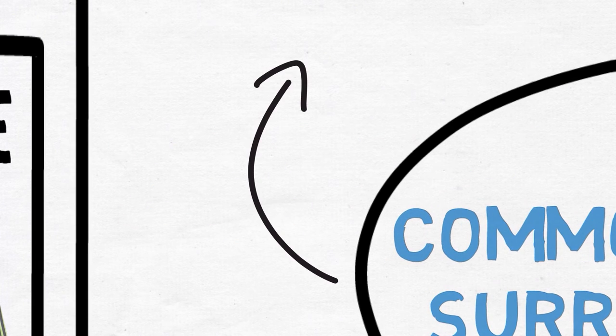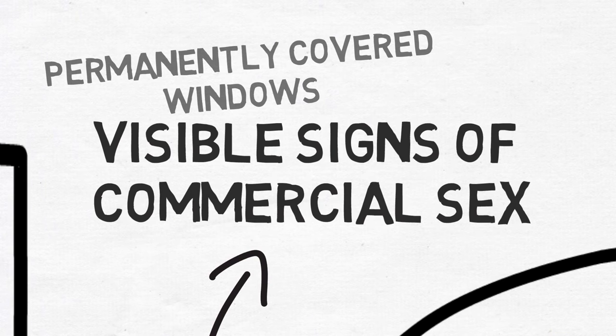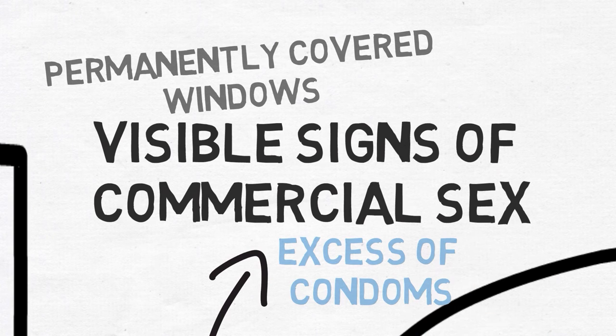Common red flags of sex trafficking include permanently covered windows, rooms with little furnishings or belongings, and an excess of condoms.